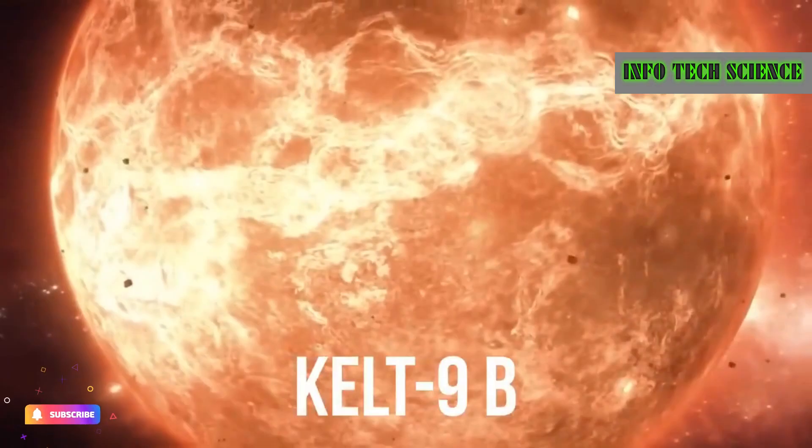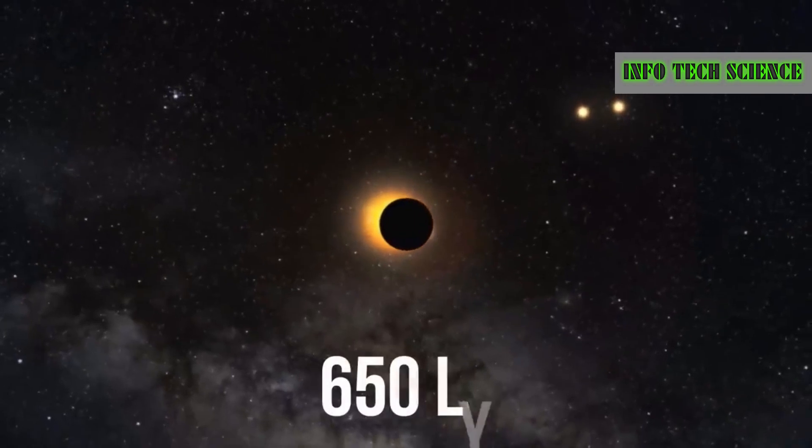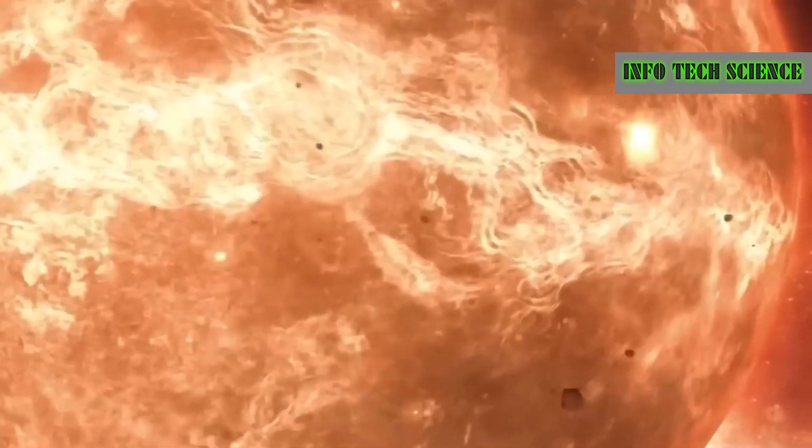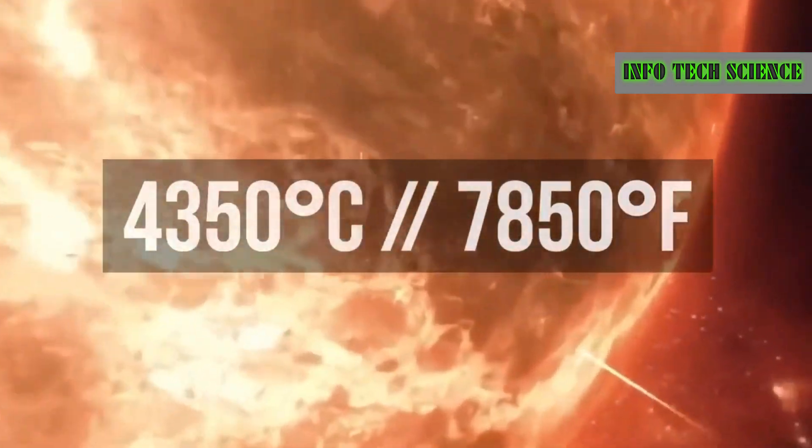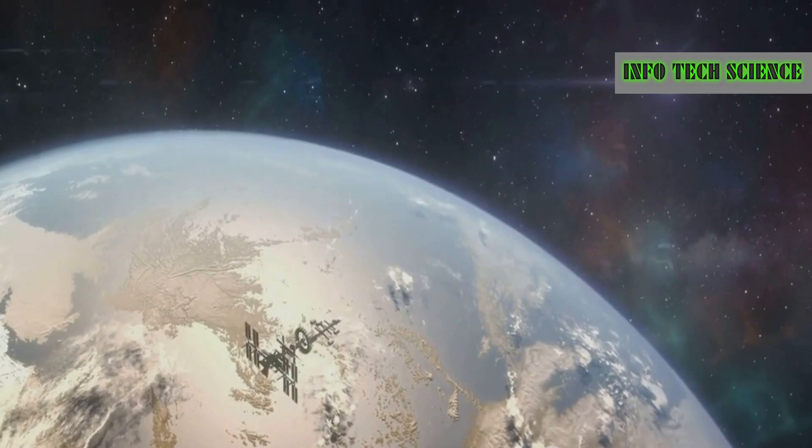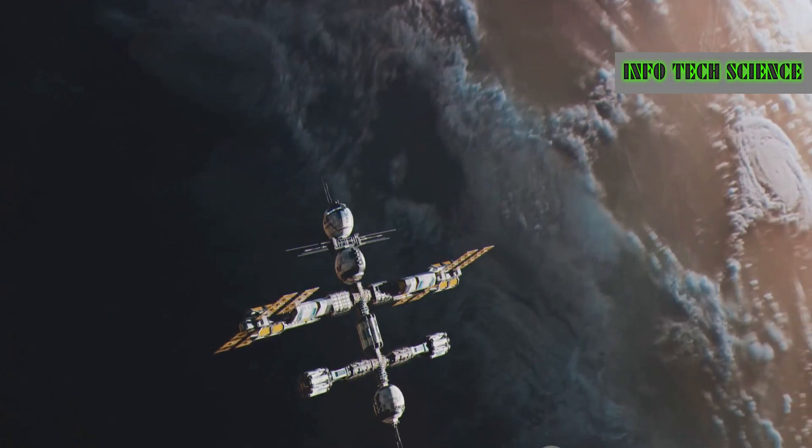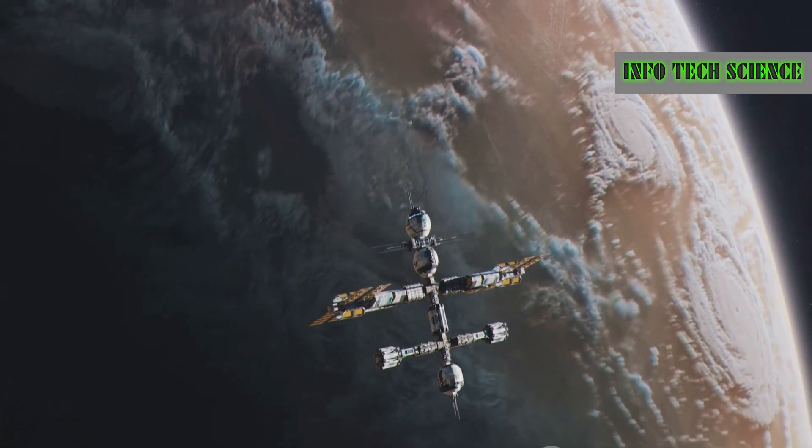Then there's KELT-9b, also known as the planet from hell. It's currently the hottest place in outer space discovered by modern astronomy. Located in the Cygnus constellation, 650 light years away from Earth, its temperature reaches over 4,300 degrees Celsius. This is hotter than the surface of many stars. KELT-9b is so hot because it orbits very close to its star, making one year on this planet last just one and a half Earth days.